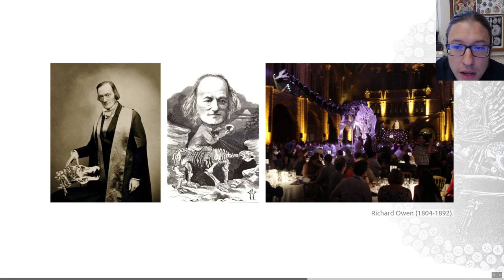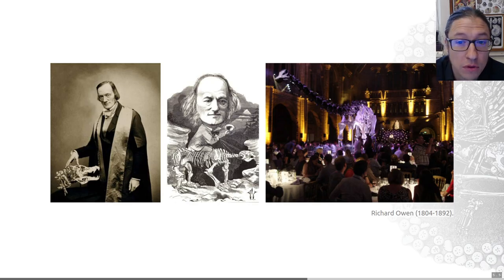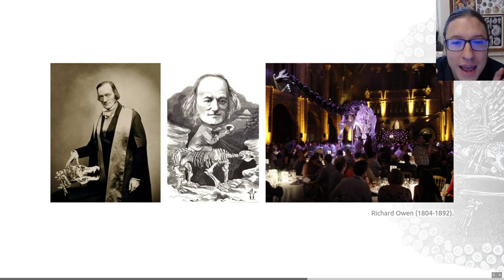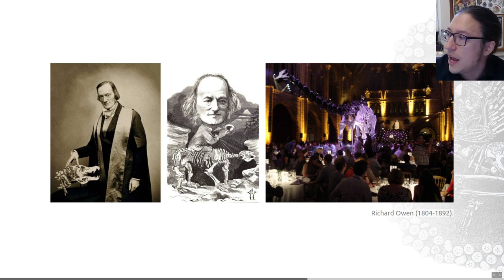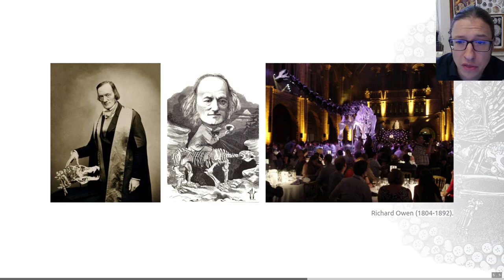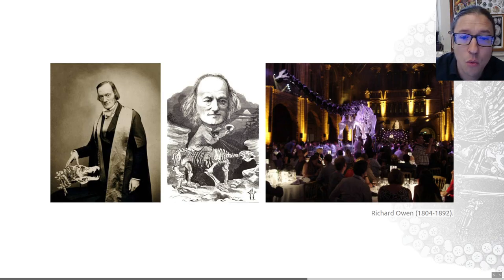He examined reptile-like fossils from the southeast of the UK and concluded that the bones of Iguanodon, Megalosaurus, and other organisms were not just lizards but members of their own group. In 1842 he called this group the Dinosauria, or the dinosaurs. He also founded the Natural History Museum in London, which is still going strong today, and insisted — quite revolutionary at the time — that it should be free and accessible to all people.